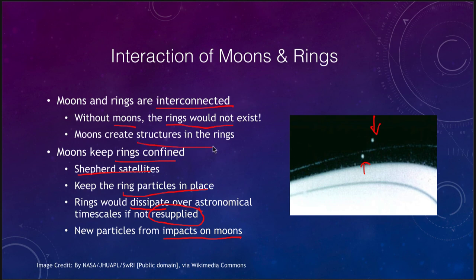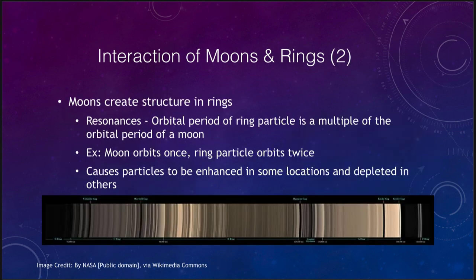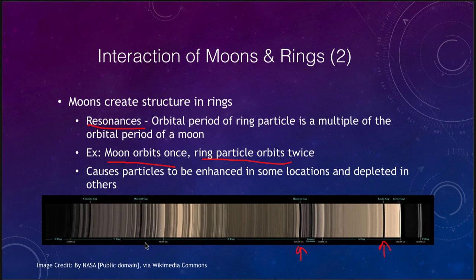The moons also create all of the structure we see in the rings — the rings would be much smoother without them. Looking closely at one of the rings, we can see all sorts of structures in Saturn's rings. The moons create those by resonances: when the orbital period of a ring particle is a multiple of the orbital period of a moon — for example, the moon orbits once and the ring particle orbits twice — that causes particles to be enhanced in some areas and depleted in others, giving us very distinct gaps. Narrow rings are very well defined because of shepherding satellites, and all other structures are also likely interactions with various moons.